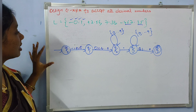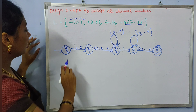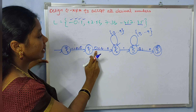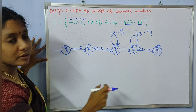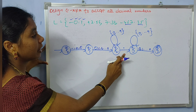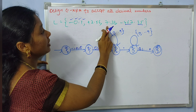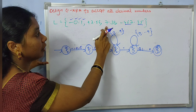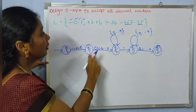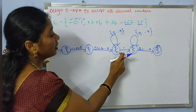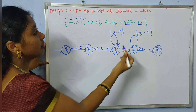Let us check whether it accepts all strings in the language. Consider the minimal string minus 0.1: take minus from here, then 0.1 — it reaches the final state. Consider plus 2.56: take plus here, then 2, 5, 6 — reaching the final state. For 7.38, since there is no sign, we first make an epsilon transition, then take 7, the decimal point, 3, and 8 — reaching the final state.